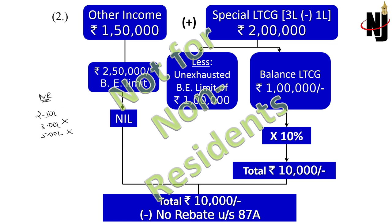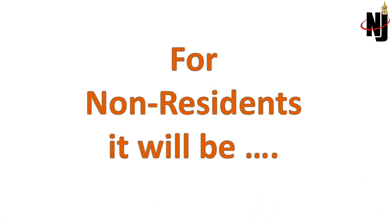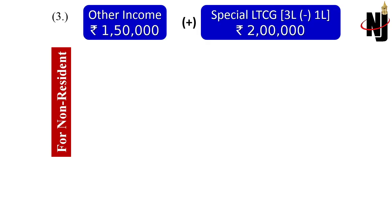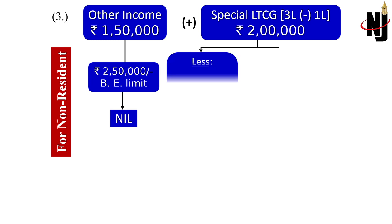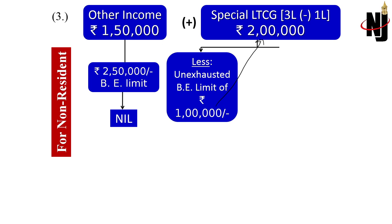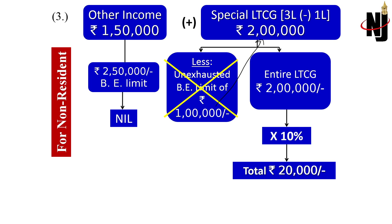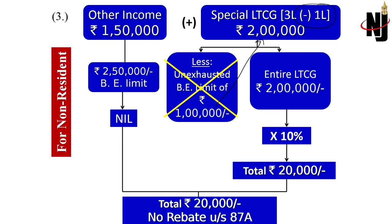Non-residents do enjoy a basic exemption limit of 2.5 lakh only — they never get the higher limits of 3 lakh or 5 lakh available only to residents. In the same example for a non-resident: normal income 1.5 lakh, special LTCG 2 lakh. Tax on normal income is nil, but the unexhausted 1 lakh basic exemption cannot be adjusted against LTCG. The entire 2 lakh LTCG is taxable at 10%, giving tax of 20,000. Rebate under 87A is not available to non-residents.